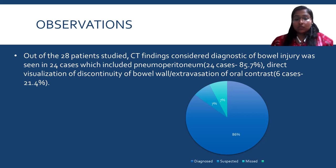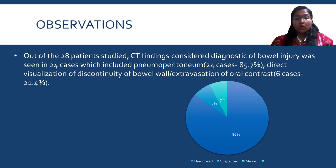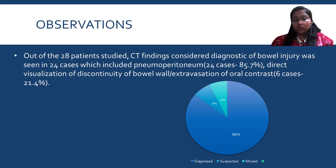The other 7% were missed — two cases where there was significant solid organ injury but no pneumoperitoneum. Laparotomy was performed in view of significant solid organ injury, and bowel perforation was found intraoperatively. On retrospective evaluation of their CT scans, minute features like tiny foci of air adjacent to the site of perforation, fat stranding, or bowel wall thickening were identified. These could have been detected had meticulous evaluation or follow-up imaging been performed.